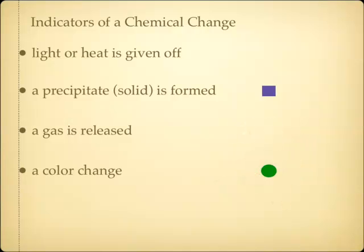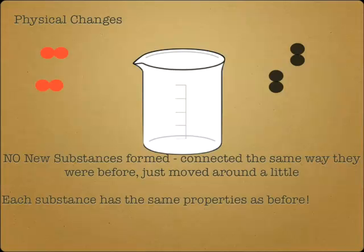So the key word is new substance. The opposite one is a physical change. Physical change is just the opposite. No new substances are formed. They're connected the same way they were before, they're just moved around a little bit. And each substance has the same properties. So here I have two red molecules and two black molecules. They're separate.